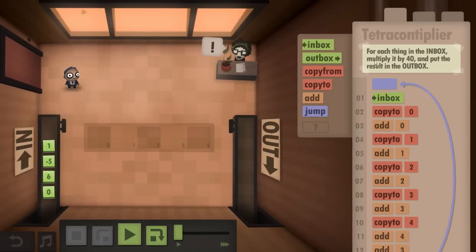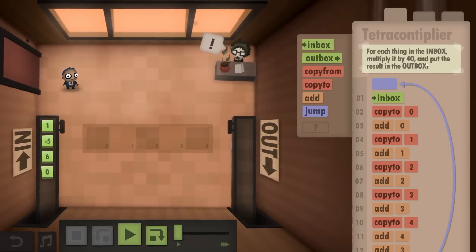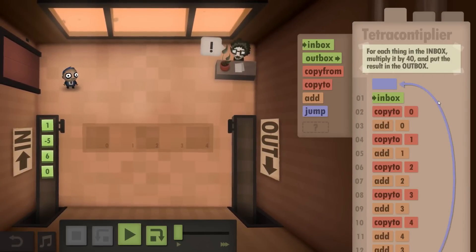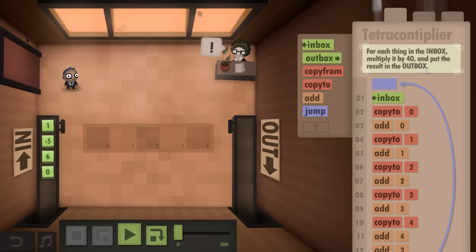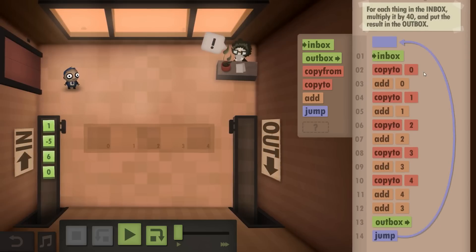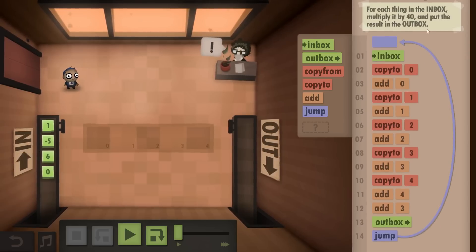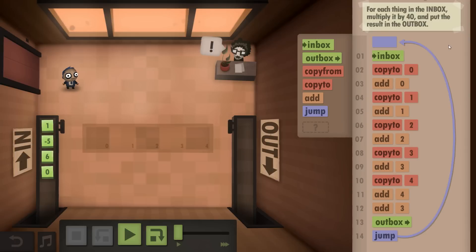So what we are supposed to do is multiply the value in the inbox by 40. We can take a similar approach as we did when we had to multiply it by 8, as in we don't have to physically do 40 add commands or something like that.